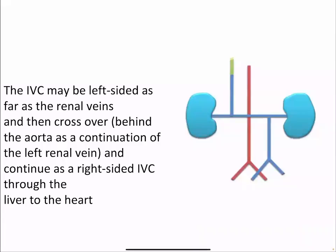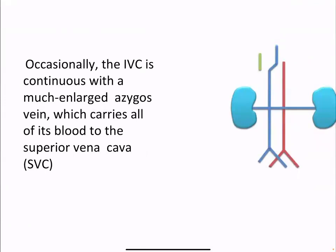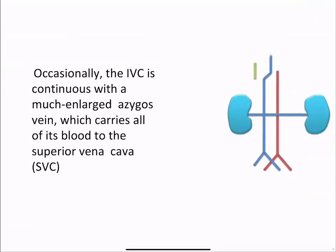The IVC may be left-sided as far as the renal vein and then cross over behind the aorta as a continuation of the left renal vein, and continue as a right-sided IVC to deliver blood to the heart. Occasionally, the IVC is continuous with a much larger azygos vein, which carries all its blood to the superior vena cava, causing the azygos vein to enlarge.